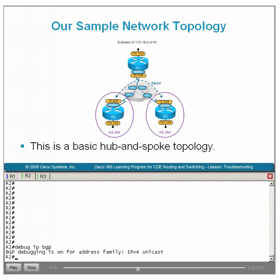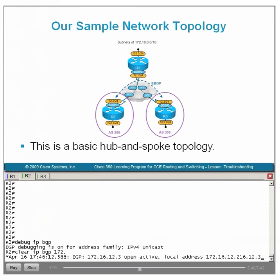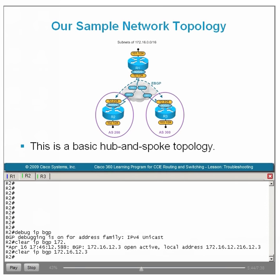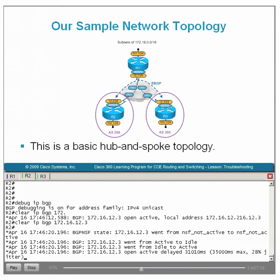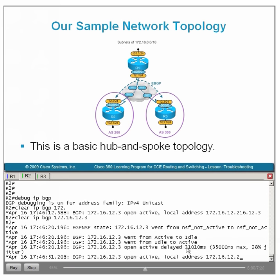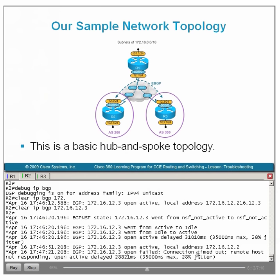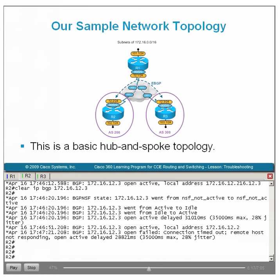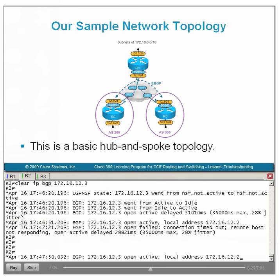With debug IP BGP running, we will statically initiate a BGP neighbor relationship session by running the clear IP BGP command. This procedure moves the BGP peer formation state from active to idle and then back from idle to active again. After a period of time, the BGP open session process times out and generates the message 'connection timeout, remote host not responding.' While this is useful, it still does not provide a complete picture of the problem.